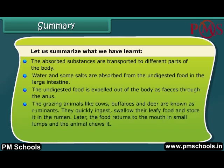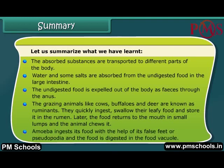The grazing animals like cows, buffaloes, and deer are known as ruminants. They quickly ingest and swallow their leafy food and store it in the rumen. Later, the food returns to the mouth in small lumps and the animal chews it. Amoeba ingests its food with the help of its false feet or pseudopodia, and the food is digested in the food vacuole.